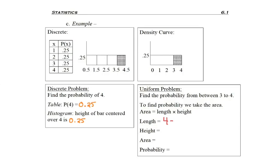And so in this case, the length, the distance between 4 and 3 is just 1. Now I need the height to find the area, and remembering that the height is the height of my curve, I can see over here that it's got a height of 0.25, so I can fill that in.